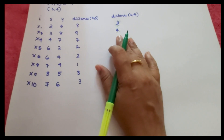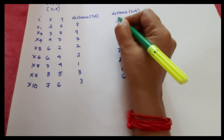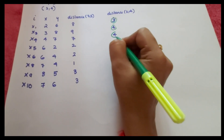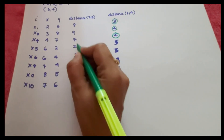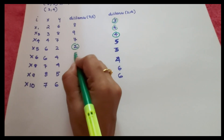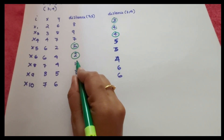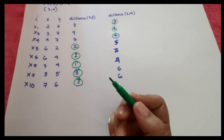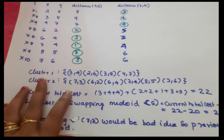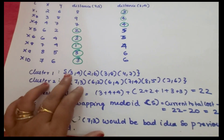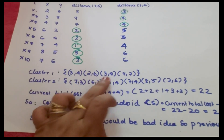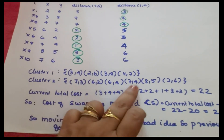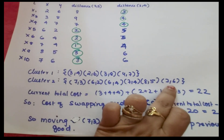Comparing the distances, we assign points to the nearest medoid. Cluster 1 with medoid (3,4): (2,6), (3,8), (4,7). Cluster 2 with new medoid (7,3): (6,2), (6,4), (7,4), (8,5), (7,6). We then calculate the current total cost: 3+4+4+2+2+1+3+3 = 22.